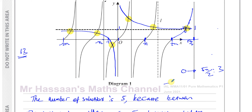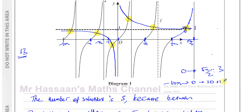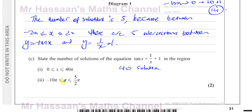Between minus 10 pi and 0, you're going to have 10 intersections — one every pi radians. But there's one extra intersection between 0 and minus pi, where this reciprocal curve goes below the x-axis — that's the only place below the x-axis where there's a solution, because it curves down at that point. So you have 10 plus 1 = 11 on the negative side. Altogether: 11 plus 3 gives 14 solutions.